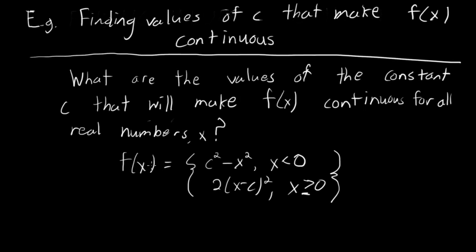Here we have f as a piecewise defined function: c squared minus x squared for x less than 0, so that's for negative values of x. And 2 minus the quantity x minus c, quantity squared, for x greater than or equal to 0 — so that's for positive values of x and x equal to 0.